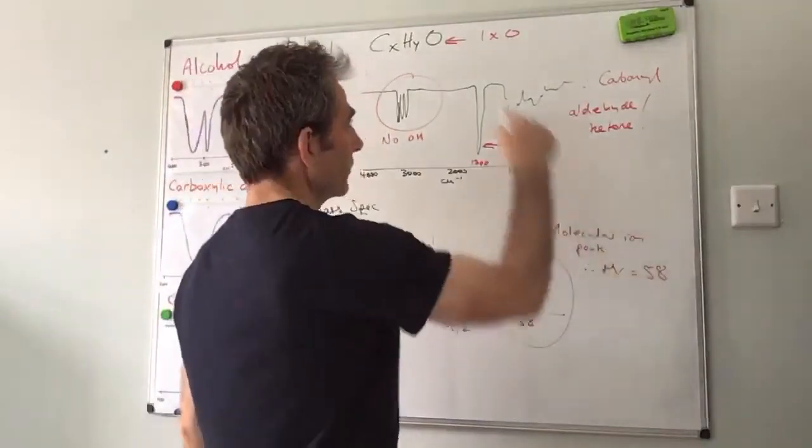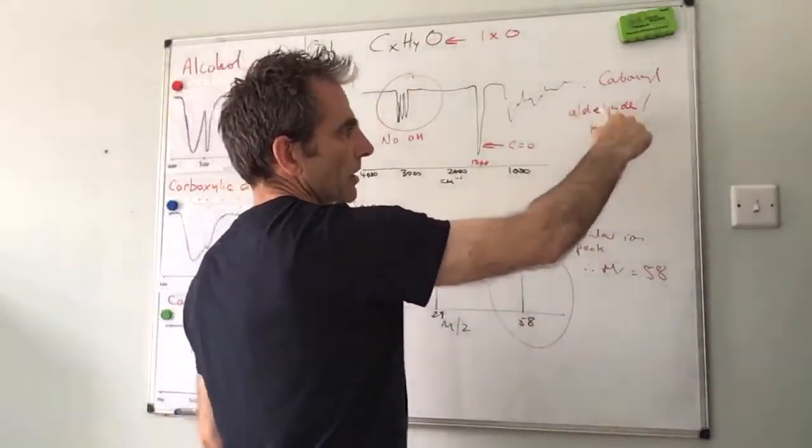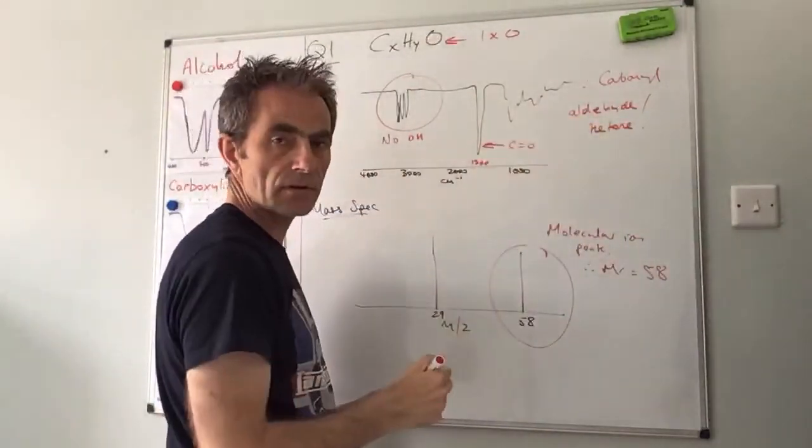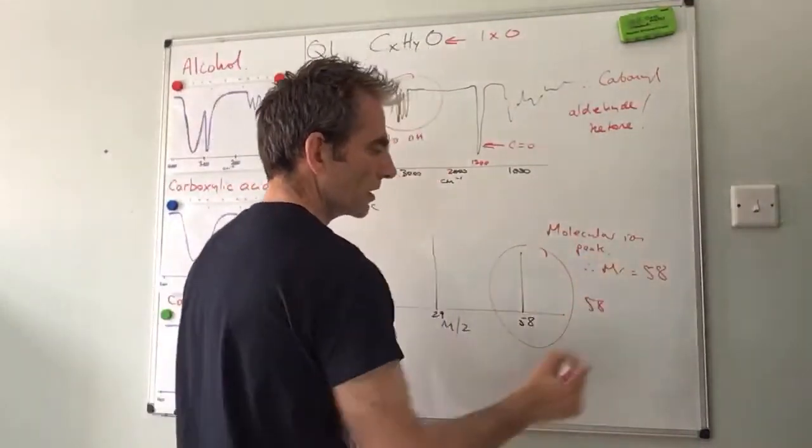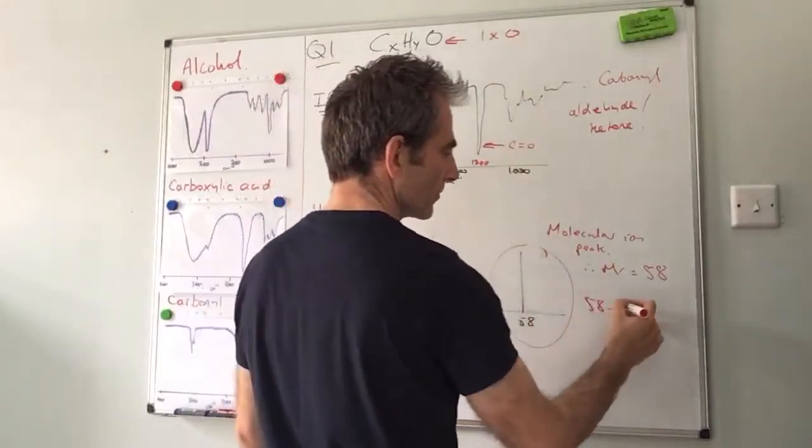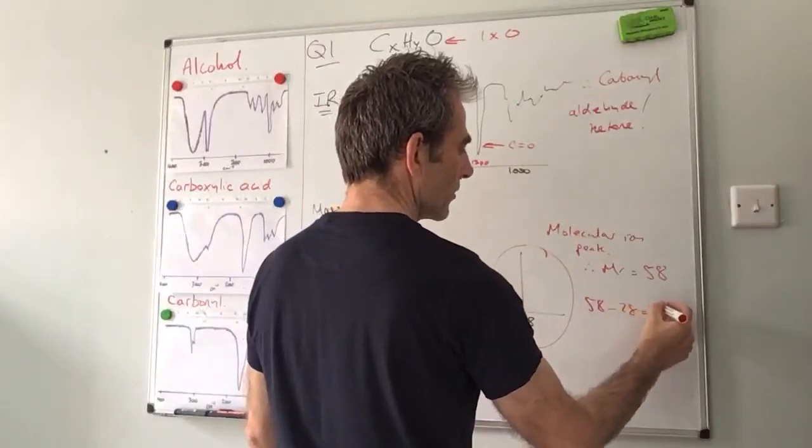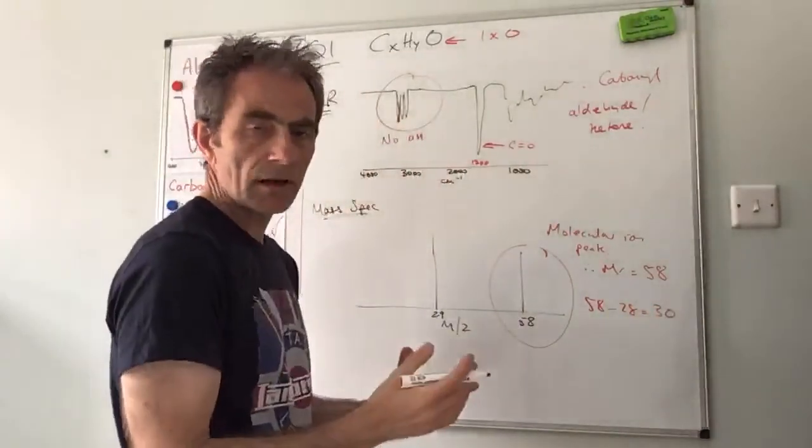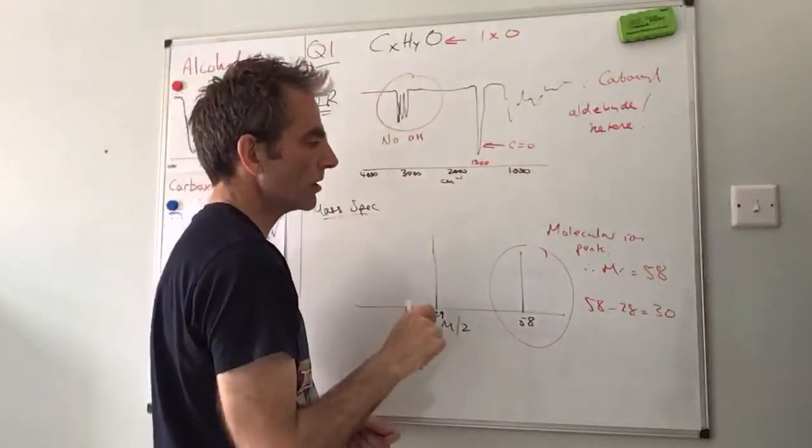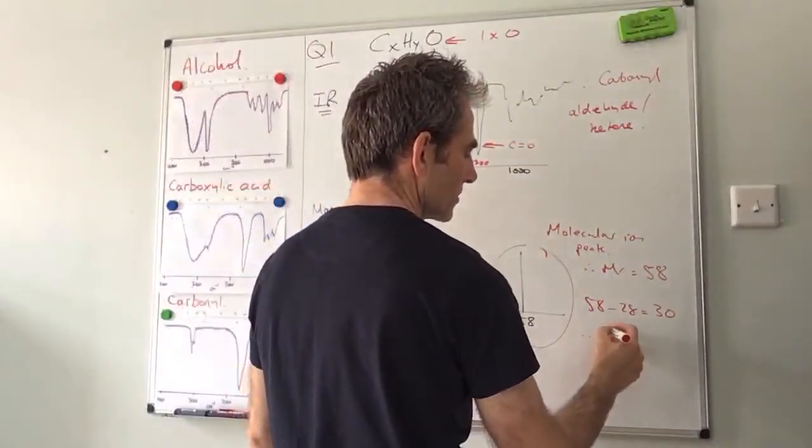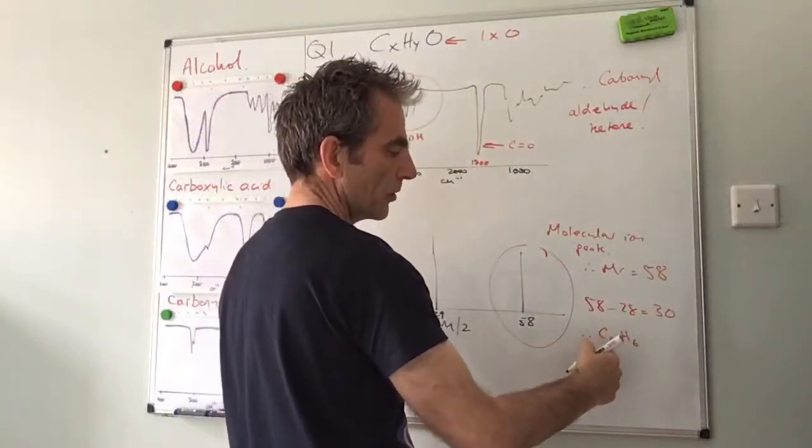So we know it's made of carbon hydrogen and oxygen, we know its MR is 58, we know it's either an aldehyde or a ketone so therefore it's got a C=O. So what I would do now is I would go 58, that's the mass of the whole molecule, minus the CO part - that's 12, 16, 28 - is 30. So the rest of the molecule is 30, it's only carbons and hydrogens in the rest of the molecule, so that's C2H6, that's 30.